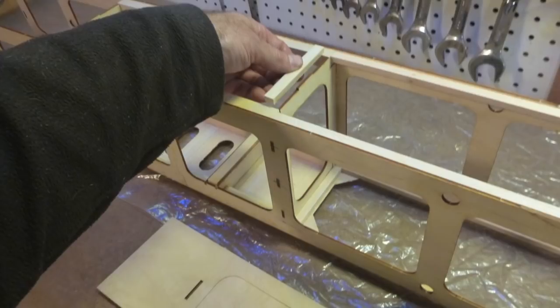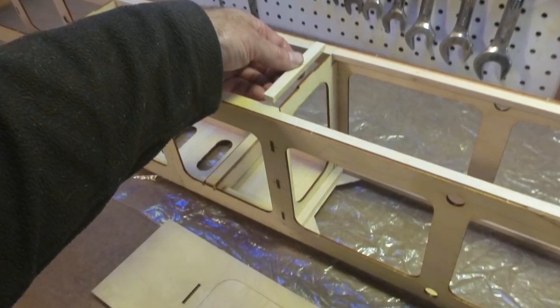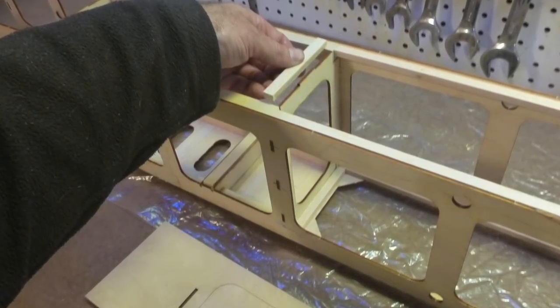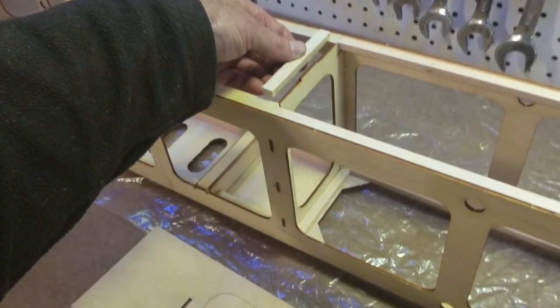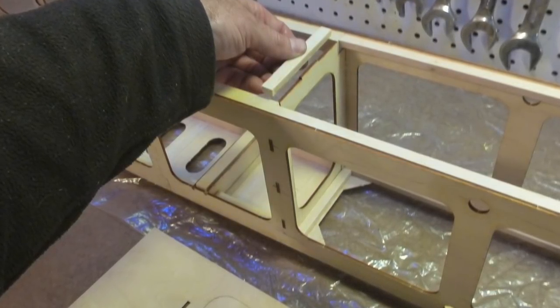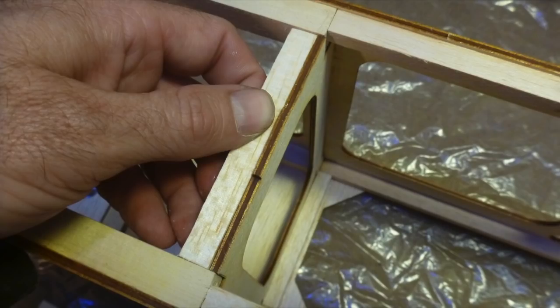Now, flip the fuselage upside down and glue in a three-eighths inch by quarter inch piece of balsa stock across the front of the bottom of the bulkhead number 6 that separates the center section from the payload section. It should be flush with the other stock and the bulkhead's tab should protrude past it.